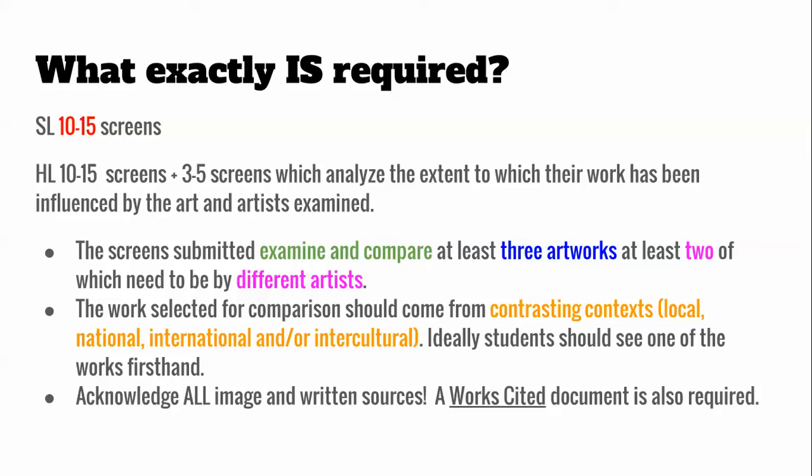Your artists must come from contrasting contexts — local, national, international, or intercultural. It would be great if you could visit one of the works firsthand at a museum in DC, which is a primary source. You want your artists to be from different backgrounds, ideally different areas of the world, different eras in history, and different art movements. You need to acknowledge all image and written sources, turn in a works cited document, and include in-text citations for all images and knowledge sources.